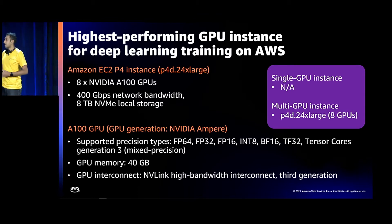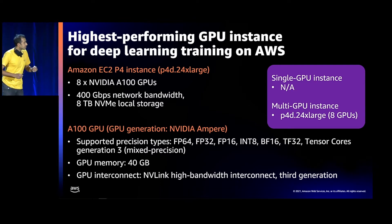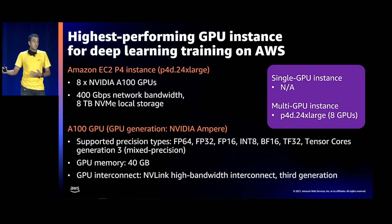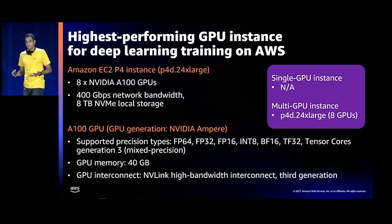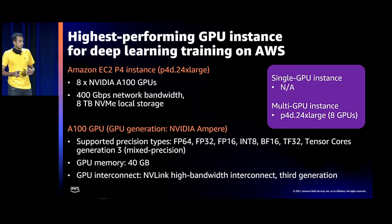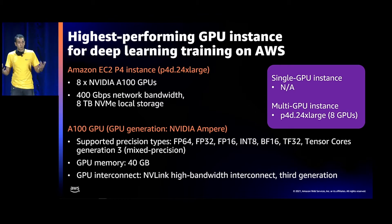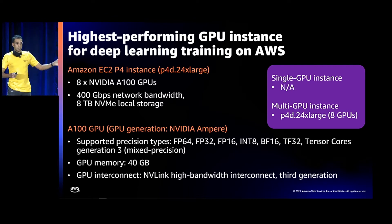There are customers who work with terabytes and petabytes of data, have really complex and very large models that need the 40-gigabyte GPU memory on these instances. All the record-breaking benchmarks are typically run on this GPU. Because it's newer, it supports a range of precision types — lower-precision arithmetic — that don't exist in older GPUs, which is why they're more performant. The FP64 double-precision is used in HPC use cases but not for machine learning.